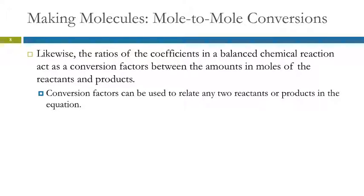We can use the ratios of coefficients in a balanced chemical reaction in the same way, just like we did with the cheese. The conversion factors can relate any two reactants or products. You can relate two reactants or two products — any combination. You don't have to go from the first to the last; you just pick the two that you need. So it's actually quite efficient.